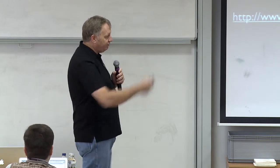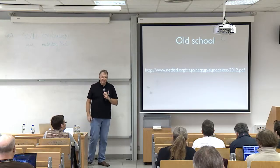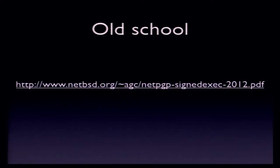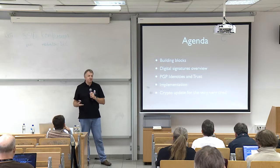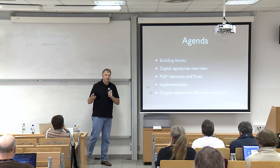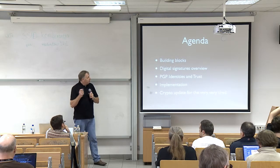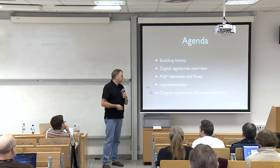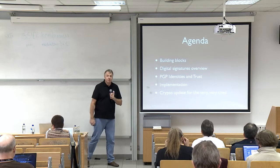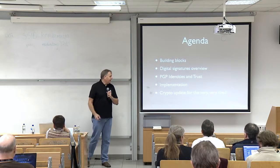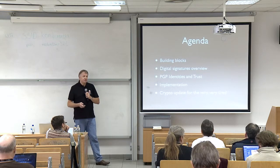I'm fairly old school. I put up a paper here — I don't think there are any proceedings from this conference, but feel free to have a look at it. The agenda for today: the building blocks, what we're trying to do, what we're trying to achieve, how we're going to achieve them, an overview of digital signatures, PGP identities and trust, how we do it, contrast that to PKI, talk about the implementation I did, and a crypto update if there's time at the end.